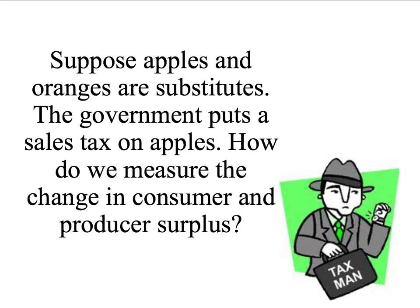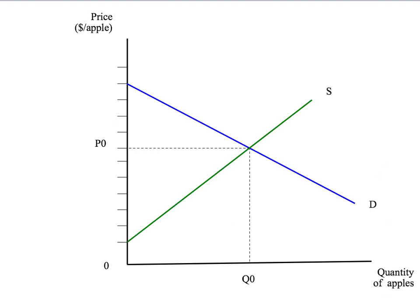Here's our example. Suppose apples and oranges are substitutes. The government puts a sales tax on apples. How do we measure the change in consumer and producer surplus? Well, that sounds easy — we've done this before. Quantity of apples on the horizontal axis, price on the vertical axis, demand for apples, supply for apples, initial equilibrium price, and initial equilibrium quantity.